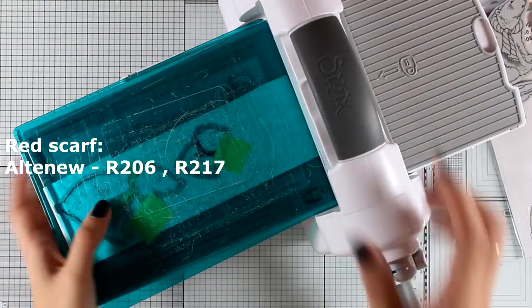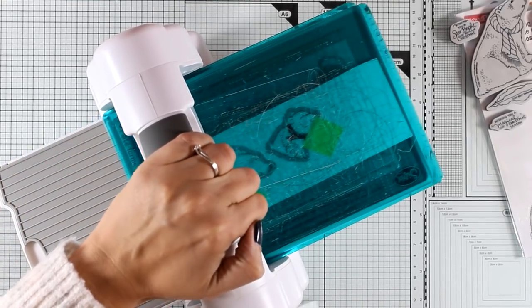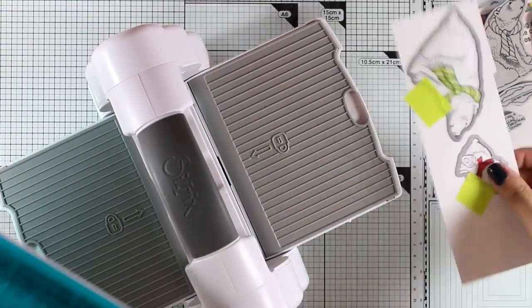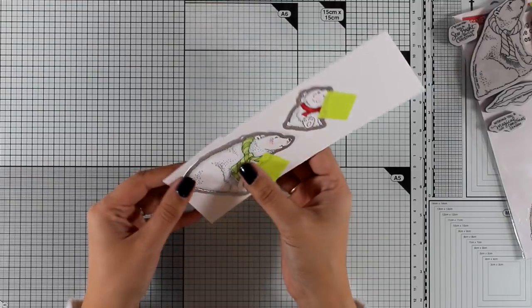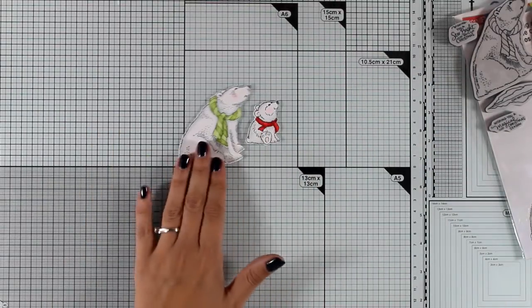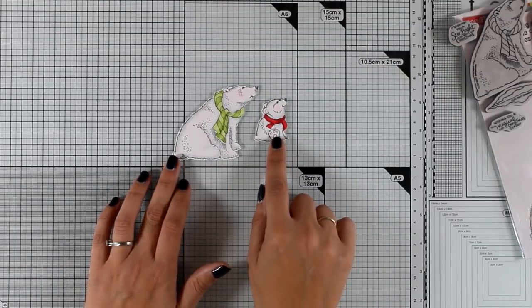Now you can see on screen the two colors I used for coloring the red scarf for the little polar bear. I'm running everything through my Big Shot machine to cut out the images with the matching dies. I do use colors from different brands of alcohol markers because I know they work great together, so don't be afraid to do that.